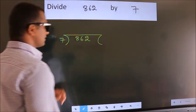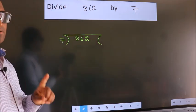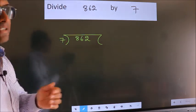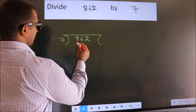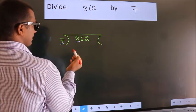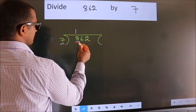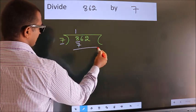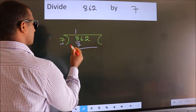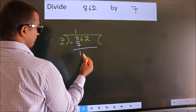This is your step one. Next, here we have 8, here 7. A number close to 8 in the 7 table is 7 once 7. Now we should subtract. We get 1.